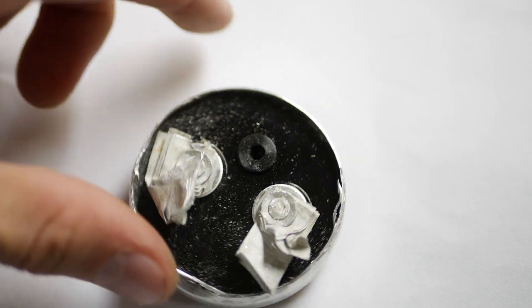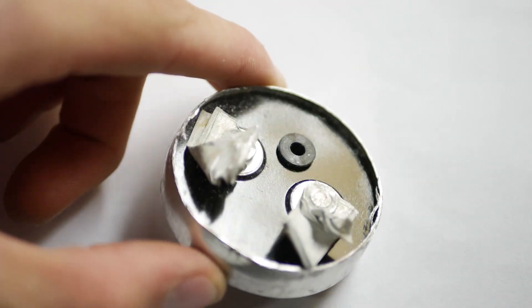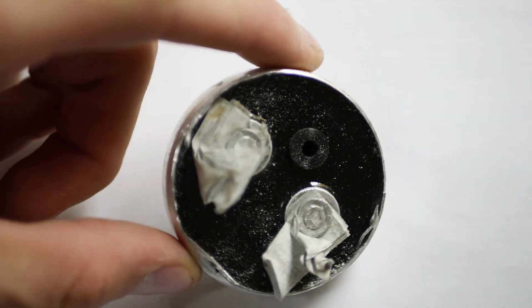Now this capacitor cap has multiple tin metal tabs which connect to the anode and cathode plates.